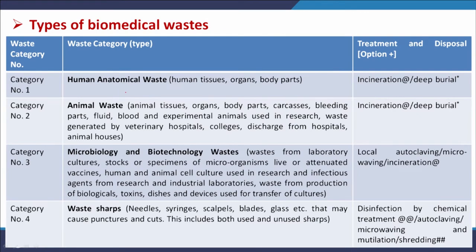Waste generated in hospitals can be categorized into different types. Category one: human anatomical wastes — human tissues, organs, and body parts — which can be disposed through incineration or deep burial. Deep burial is recommended when the population of the town is lower than 2.5 lakhs, and incineration does not include any chemical treatment.